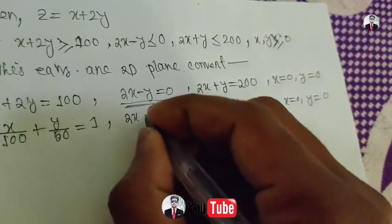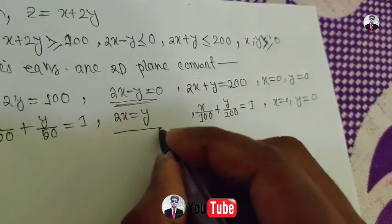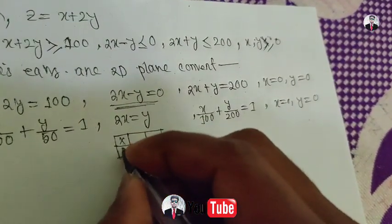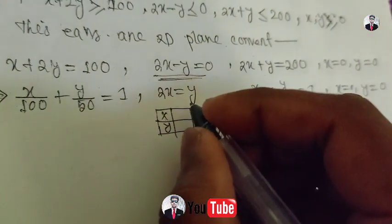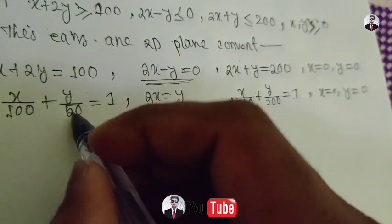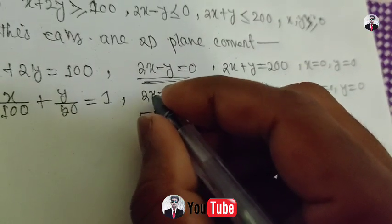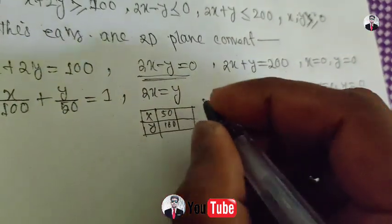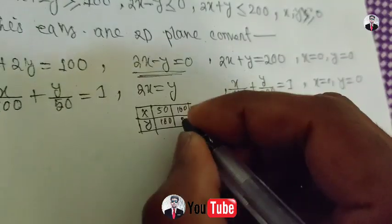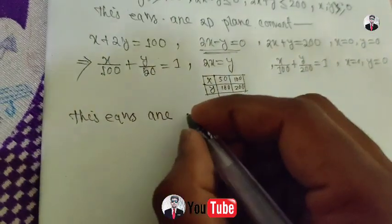For twice x minus y equal to zero, when x equals 50, two into 50 equals 100, so y equals 100. The normal values: x equals 50 gives y equals 100. So from x equals 100, y equals zero, and y equals 200 — these are the key intercept values to solve the equations graphically.